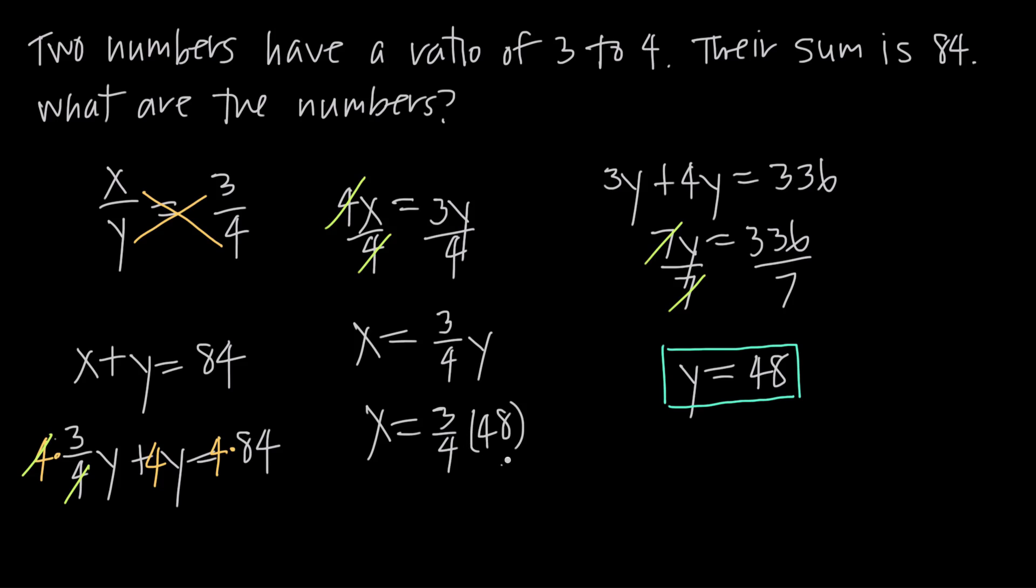Now I can simplify. Because I have 48 in the numerator and 4 in the denominator, I can reduce this. 4 goes into 48 twelve times, so I can cancel the 4 and I can make this a 12. So now I just have x equals 3 times 12, or x equals 36.